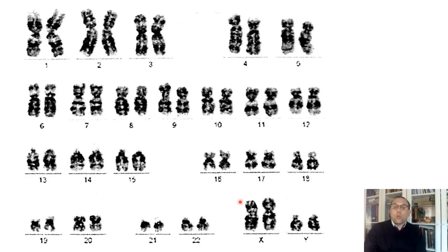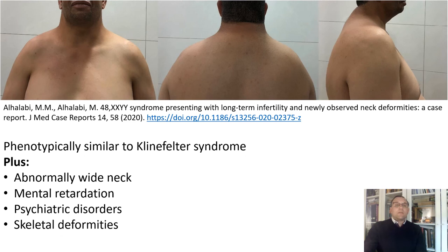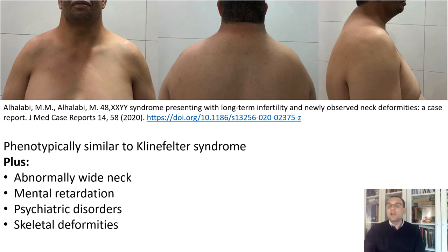What is the syndrome shown on this slide? Pause if you have to. It is XXYY syndrome. What is the karyotype of this individual? It is 48,XXYY. Despite XXYY syndrome initially being considered a variant of Klinefelter syndrome, it is now widely regarded as a separate clinical syndrome with psychological, morphological, and neurodevelopmental involvement. It is similar to Klinefelter syndrome but has additional characteristics such as an abnormally wide neck, mental retardation, psychiatric disorders, and skeletal deformities.